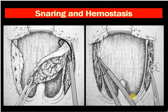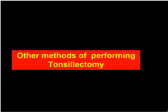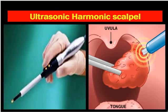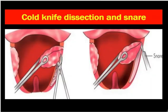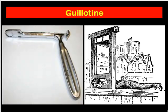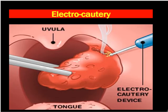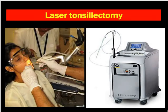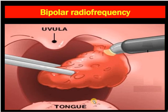Other methods of performing tonsillectomy include microdebrider, ultrasonic harmonic scalpel, cryosurgery, cold knife resection, the Gilton method as a historical method, electrocautery, laser tonsillectomy, bipolar cautery, and radiofrequency ablation.